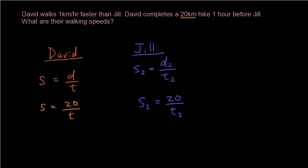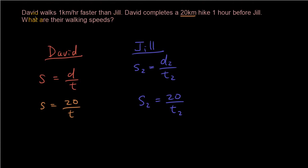Let's see if we can get rid of any other variables. It says that David walks one kilometer faster than Jill. So whatever Jill's speed is, David is one kilometer faster. This part here is saying that David's speed, which is S, is Jill's speed plus one. Because whatever Jill's speed is, add one to it and that's David's speed. I'm going to put that here instead of S. I'm going to put S2 plus one equals 20 over T.